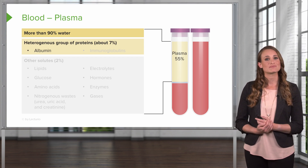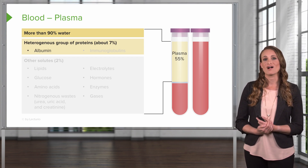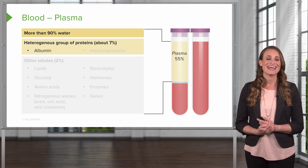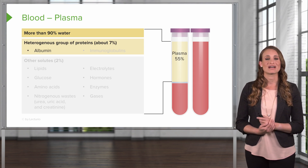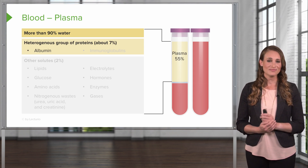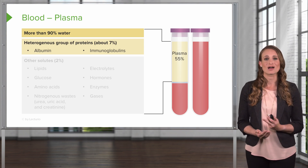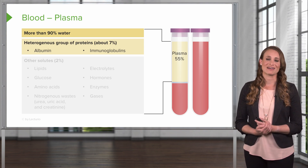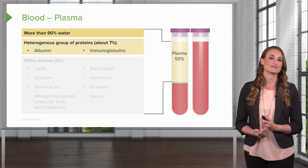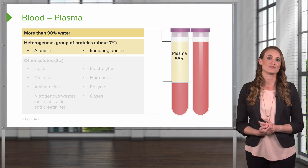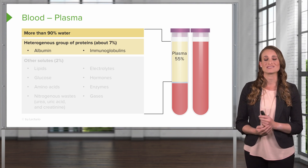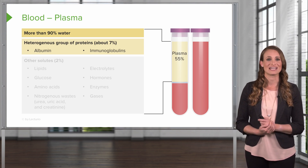The major plasma protein is called albumin, and it is responsible for keeping water in the bloodstream by its osmotic effect. Another type of protein found in the plasma are the immunoglobulins. These are the antibodies, and these are produced in response to a specific foreign substance, or an antigen.